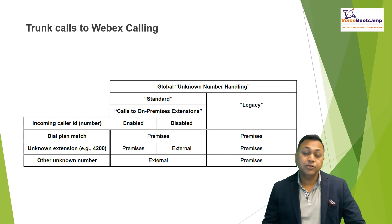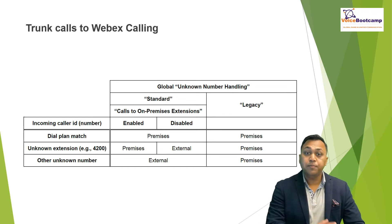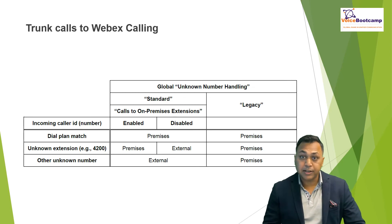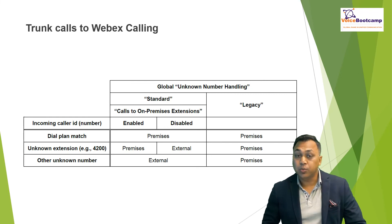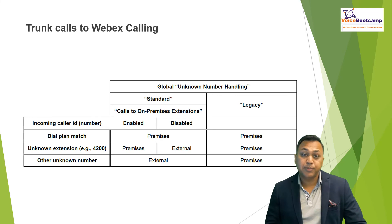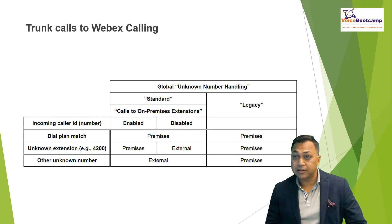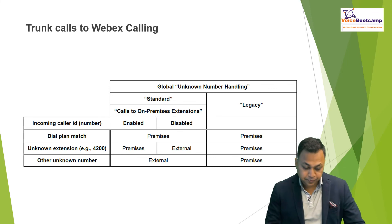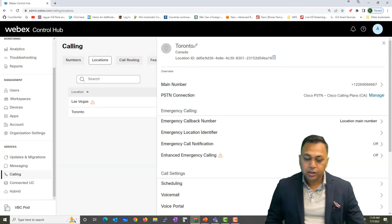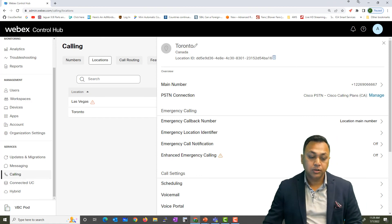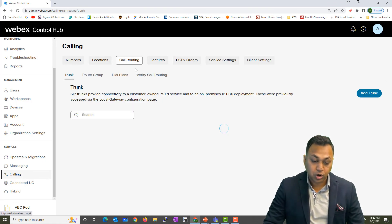In the case of an inbound call from an on-premises PBX such as Call Manager to a user, the user's screening service requires the calling number to be in E.164 format. The screening service should not specify the on-premises extension or unknown extension as the calling party criteria. Now if you take a look at the location, if we go to call routing...